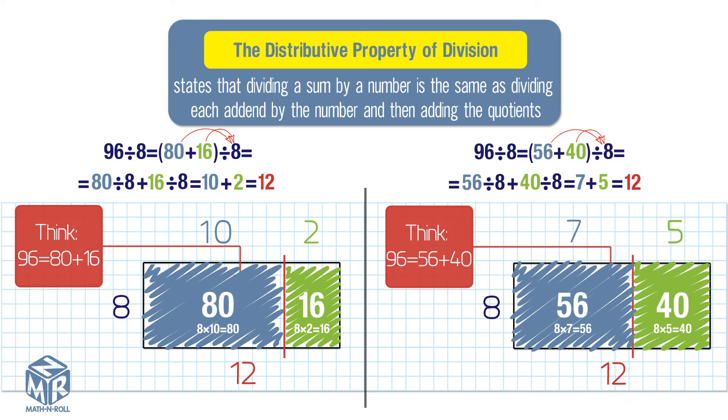The answer is the same as before, but the partial quotients were different because we broke up 96 in a different way. It is your choice on how you break up the dividend.